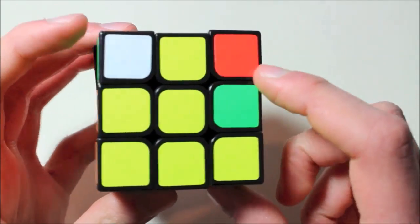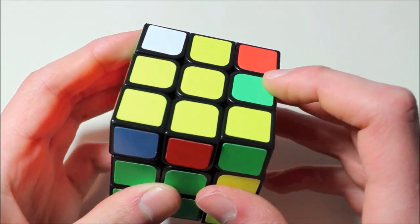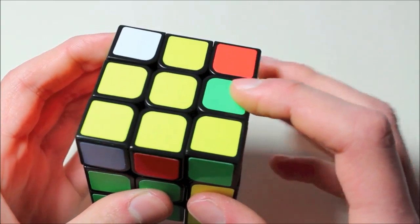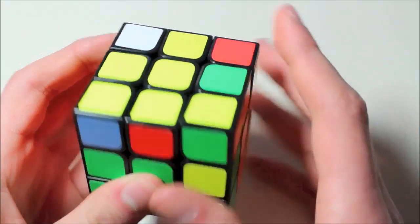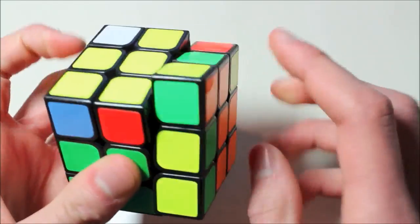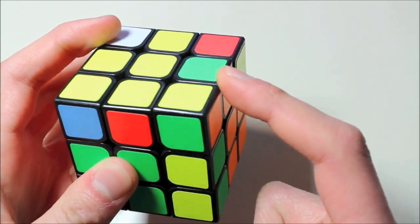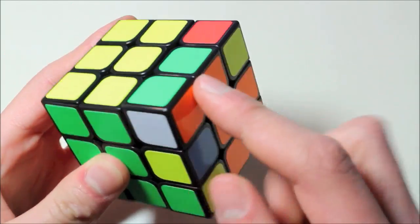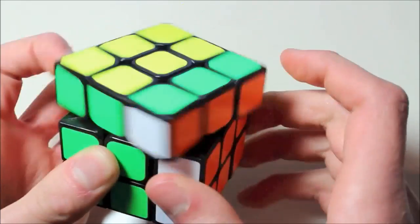I will then take note of where the pieces are and how they're oriented, and also remember the inverse of what trigger I did to set up the pieces in this way. In this case, R U prime R prime is the inverse of R U R prime. So, to set up these pieces, all I have to do is R U R prime, then I can easily insert this pair from here.